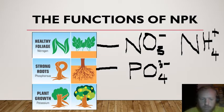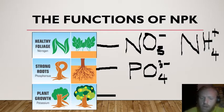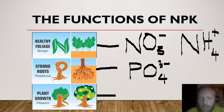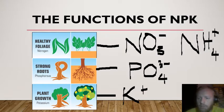Potassium is also important to the plant — for growth in general, but also for the formation of healthy flowers and fruits, and potassium also prevents diseases in the plant. Potassium is taken up in the form of the potassium ion, K⁺. That is NPK and why they are important to a plant.